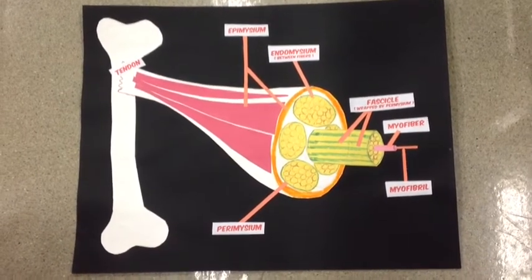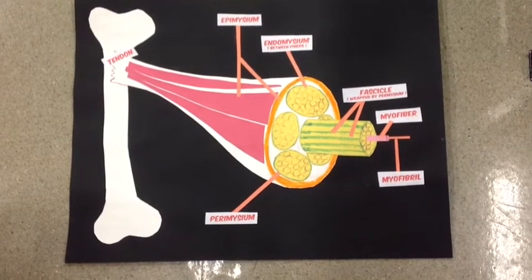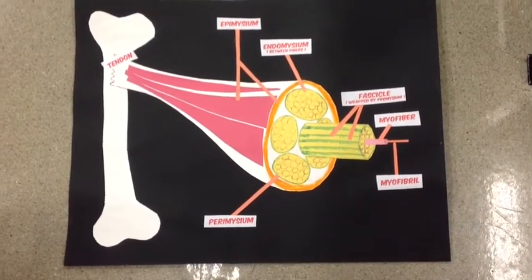A muscle contains many muscle fibers. A muscle fiber is a series of fused cells. Each fiber contains a bundle of four to twenty myofibrils.